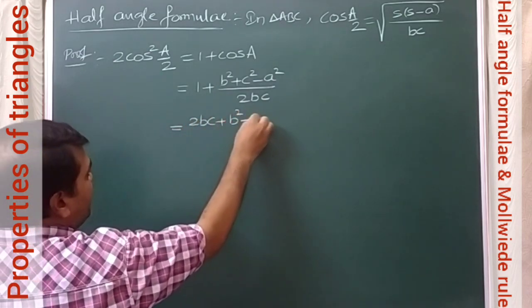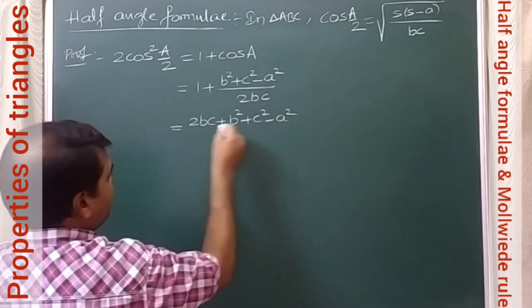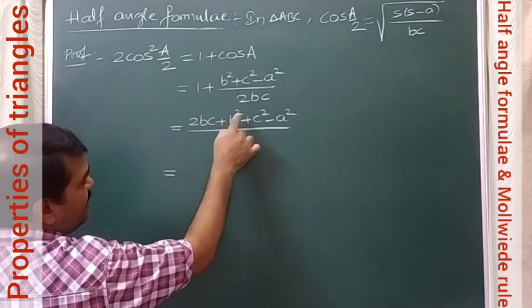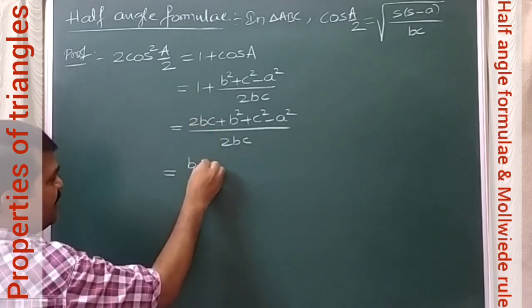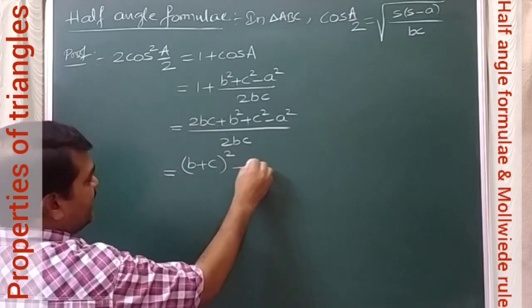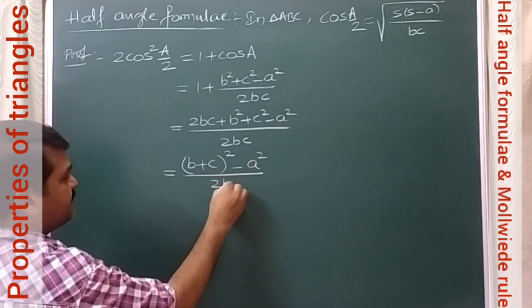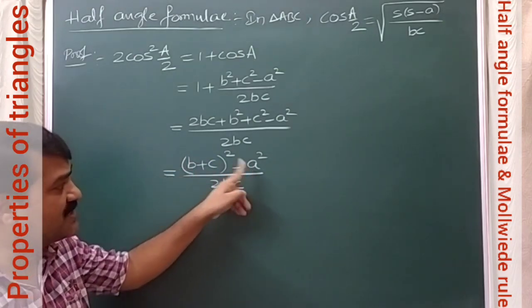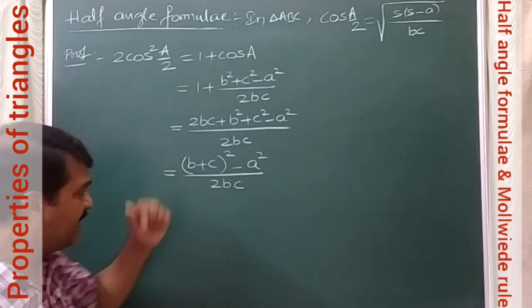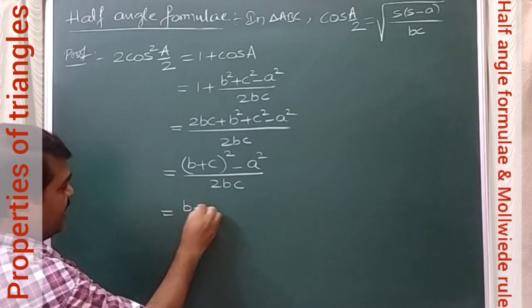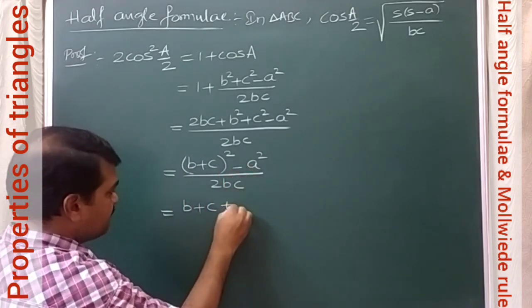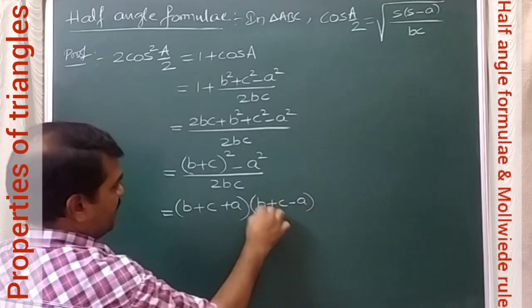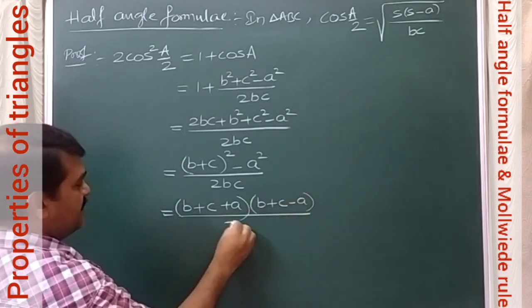The first three terms b² + c² + 2bc = (b + c)², so the numerator becomes (b + c)² − a², divided by 2bc. This is in the form A² − B², which factors as (b + c + a)(b + c − a), divided by 2bc.